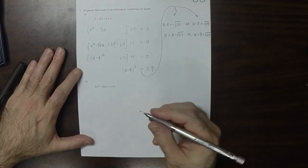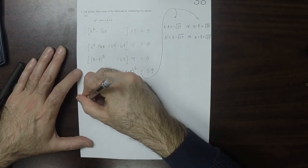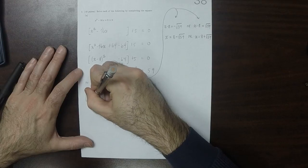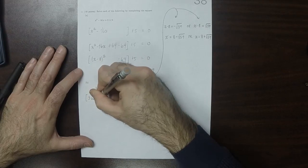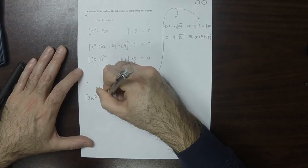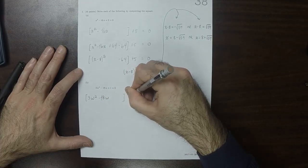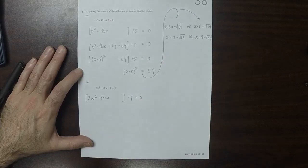For this one, again, we need to collect, except now we're using w's. So that'd be 3w squared minus 18w, and then plus 1 equal to 0.